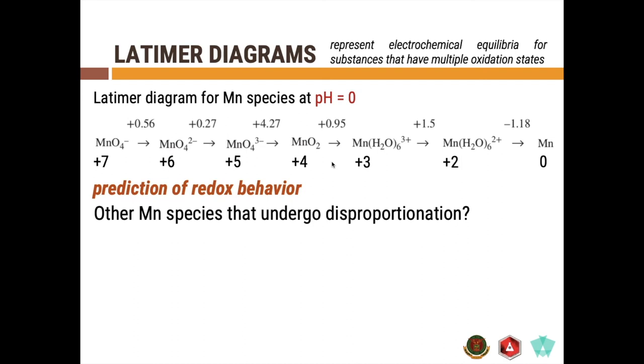So, you can see, by comparing, you see here that Mn3 plus in the form of the hexa aqua complex will undergo disproportionation reaction to form Mn2 plus. Here, again, in the form of the hexa aqua complex and MnO2 wherein manganese here is in the plus four oxidation state. And this is because the potential to its right is greater than the potential to its left. So, that will give you a spontaneous disproportionation reaction.